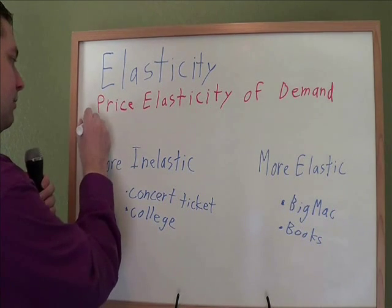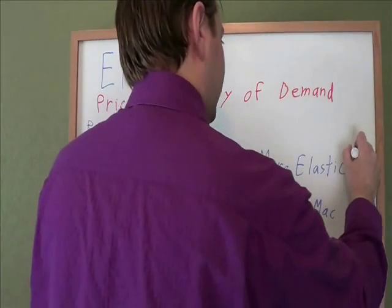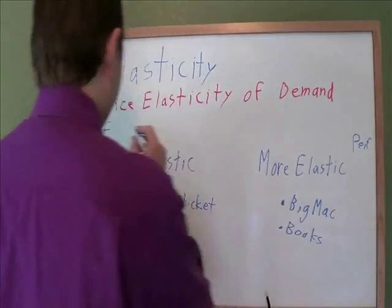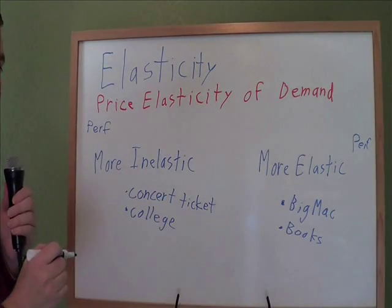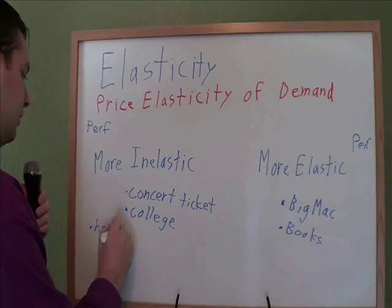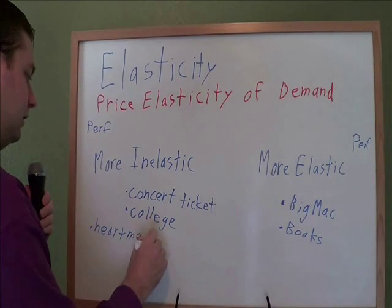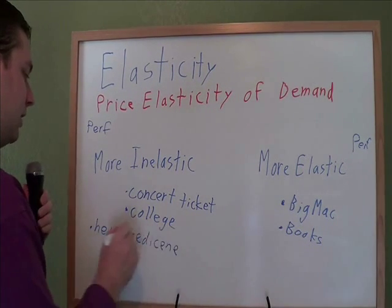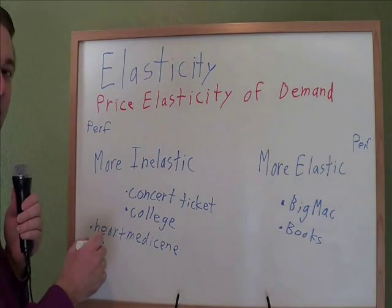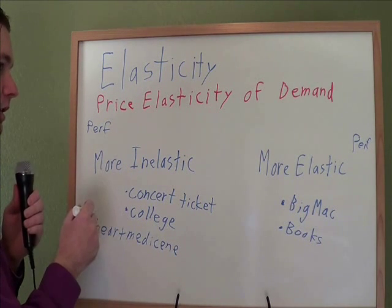There are two special kinds of elasticity: you could be perfectly inelastic or you could be perfectly elastic. Perfectly inelastic is when you don't care about the price at all. A good example of that might be heart medicine — if you don't get it, you'll die. So when the price goes up, you will still get it. No matter what the price is, there's still the same amount of people trying to get the same amount of heart medicine. That's perfectly inelastic: when the price doesn't matter at all, you still get the same exact quantity demanded.